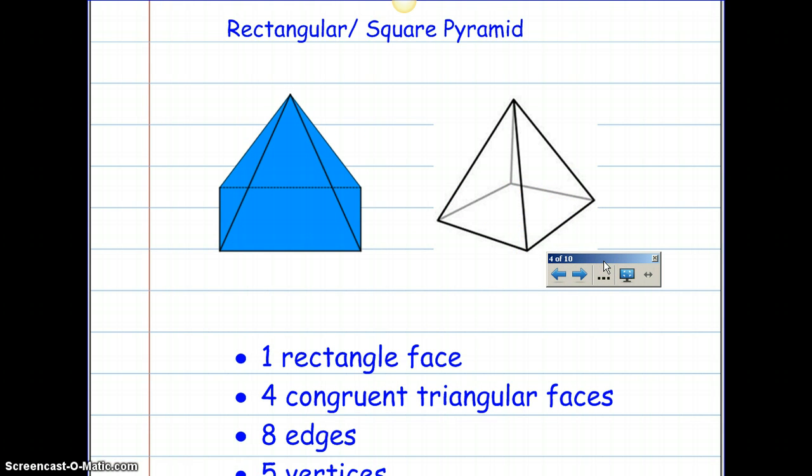Next, we have a rectangular and square pyramid. What makes these two different is their bases. If you look at the base, this face right here is a rectangle. The base of this pyramid is a square. And that's what makes them different. Anytime you see a pyramid, the bottom face is going to let you know what type of pyramid it is. This one has one rectangular face or one square face, four congruent triangular faces, eight edges, and five vertices. So make sure you fill this in on your homework.